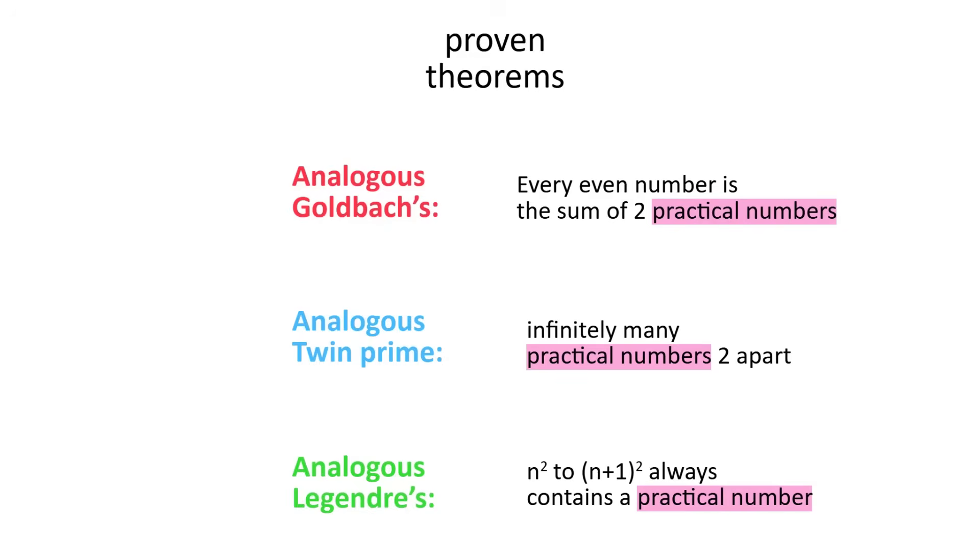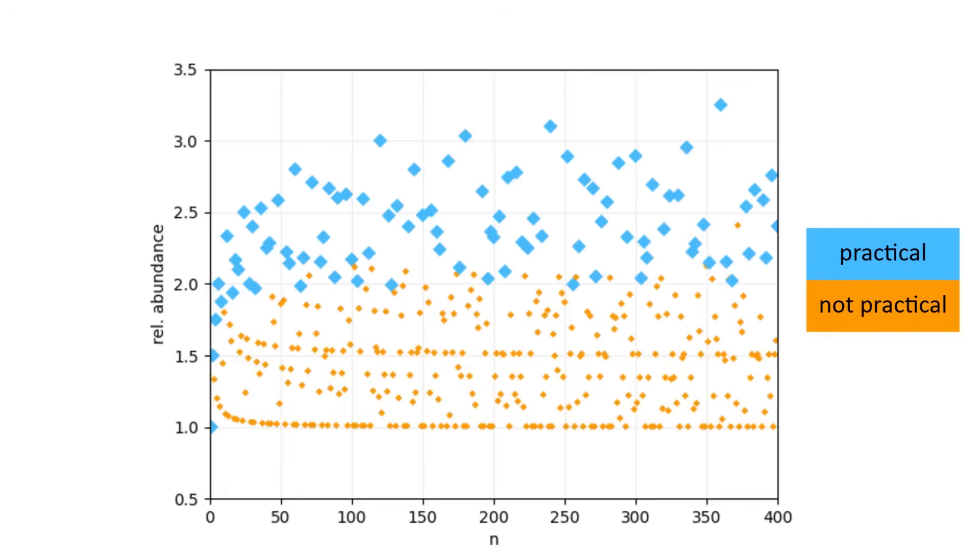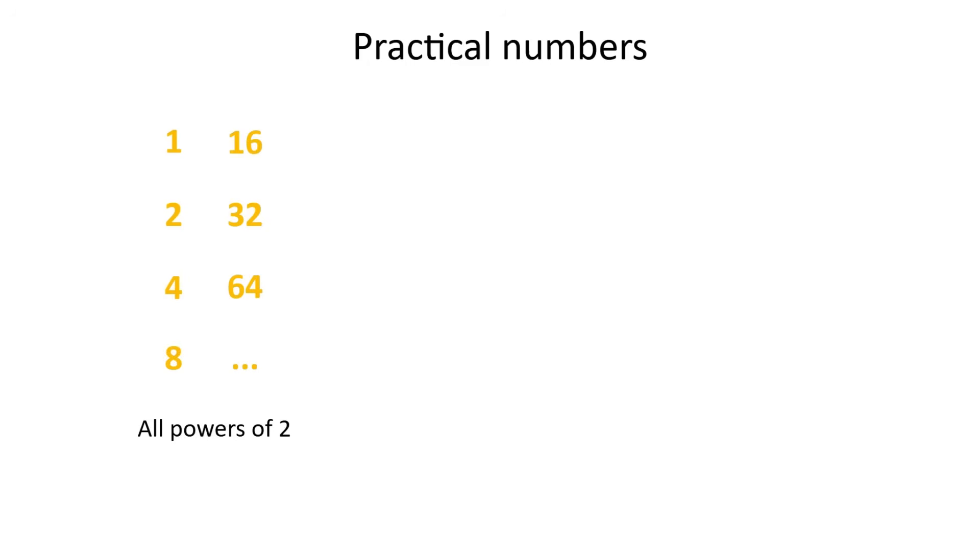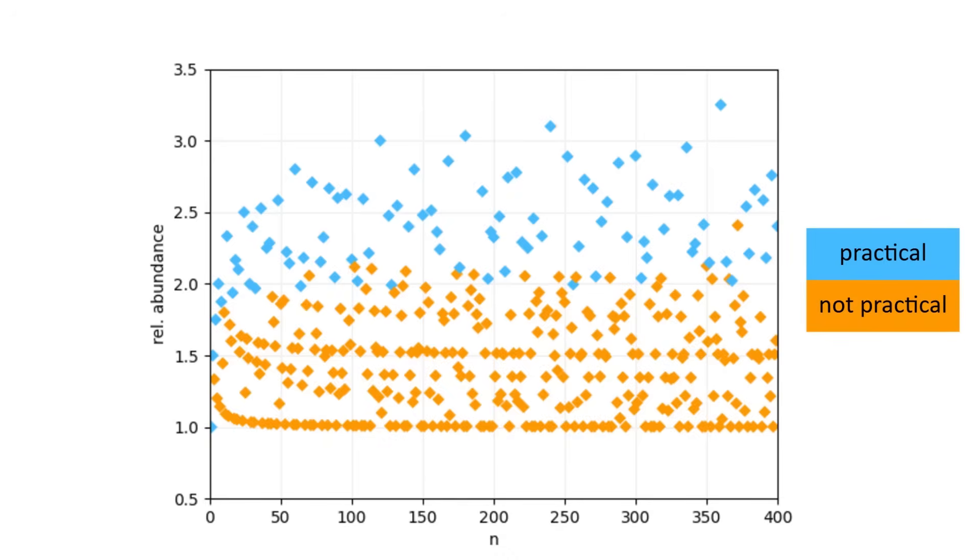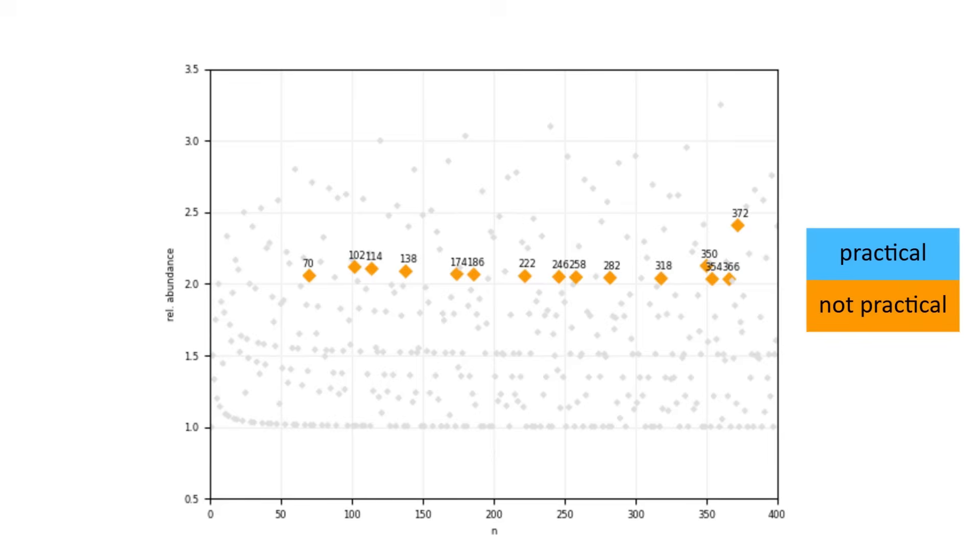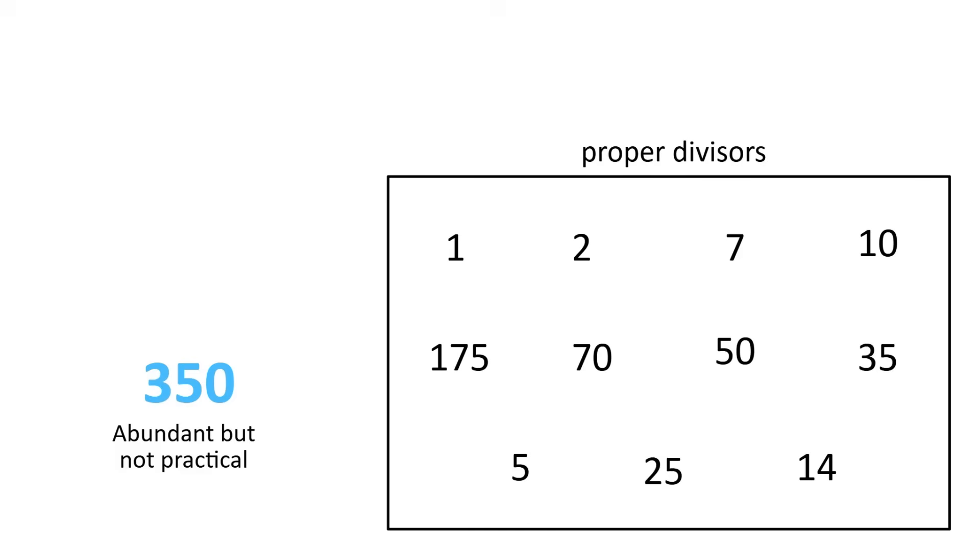Anyway, if you look at the relative abundance graph, being abundant and being practical are highly correlated. Being abundant isn't a strict requirement, though. Powers of two and even perfect numbers are always practical. Other than those, all practical numbers are abundant, but not all abundant numbers are practical. You often get non-practical numbers just above the abundance threshold. But even if you can't make every number up to n, you can usually make the most important one of these, which is n itself. This property also has a special name.